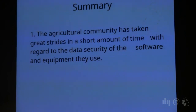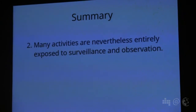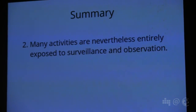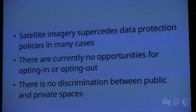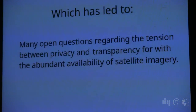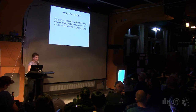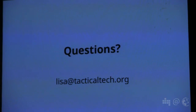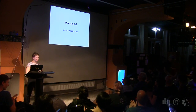In summary, the agricultural community is taking great strides in a short amount of time with regard to data security of the software and equipment they use. However, many activities are nevertheless entirely exposed to surveillance and observation. This has shown that satellite imagery supersedes data protection policies in many cases, and there are currently no opportunities for opting in or opting out, and no discrimination between public and private spaces. This has led to many open questions regarding the tension between privacy and transparency for the abundant availability of satellite imagery. Thanks. I tried to make it short because I knew I was last and that everyone would be tired and want to drink.